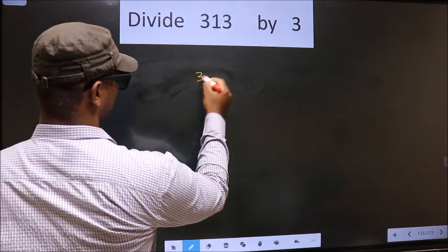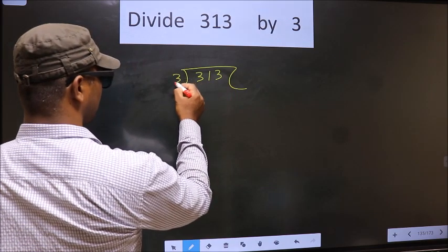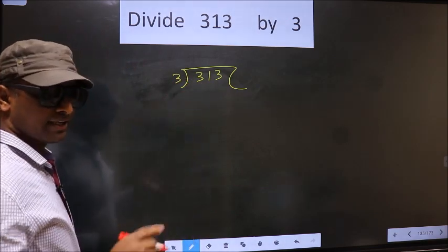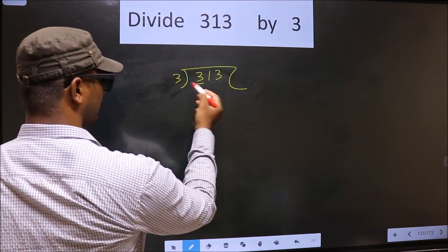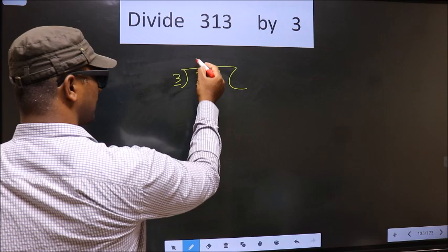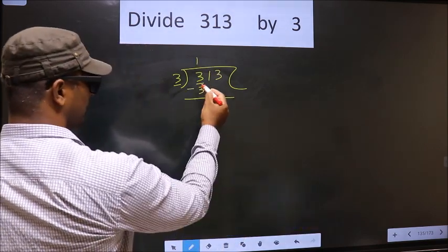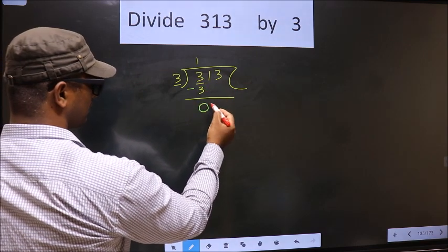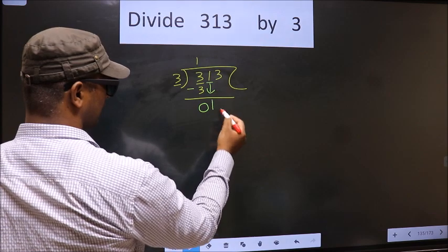That is 313, 3 here. Now here we have 3, here also 3. When do we get 3 in the 3 table? 3 once is 3. Now subtract: 3 minus 3 is 0. Now bring down the number beside it. So 1 down.